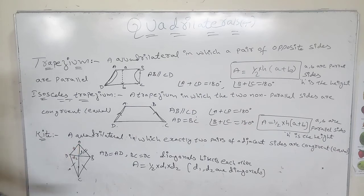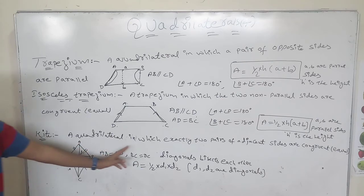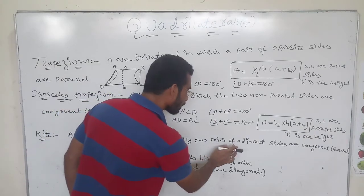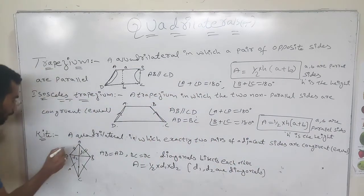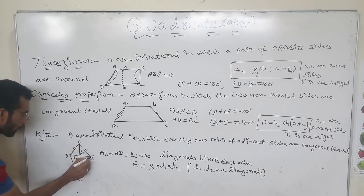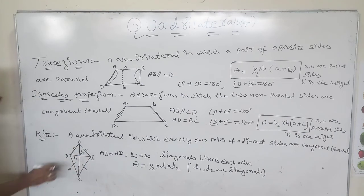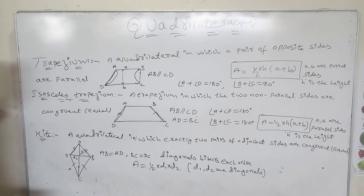Next is the kite. This figure is not a rhombus — it is different from a rhombus. A kite is a quadrilateral in which exactly two pairs of adjacent sides are congruent, that is equal. So AD is equal to AB, and DC is equal to BC.